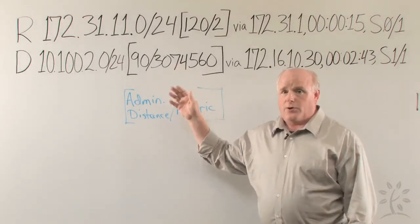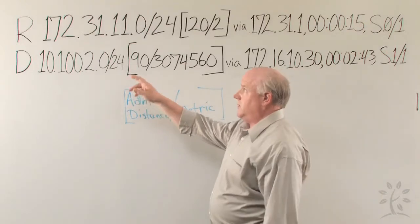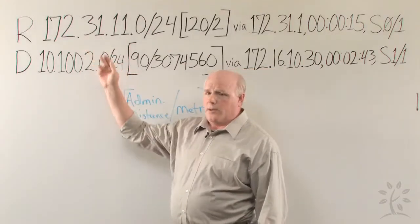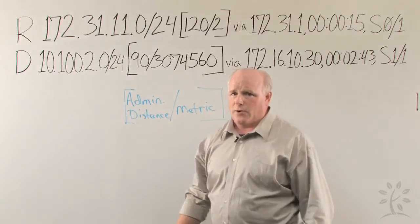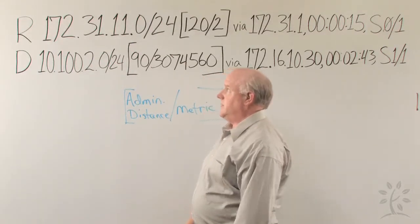This is output from a show IP route command. Let's focus on the top line right now because these two lines probably wouldn't appear together in most routing tables. But as an example,